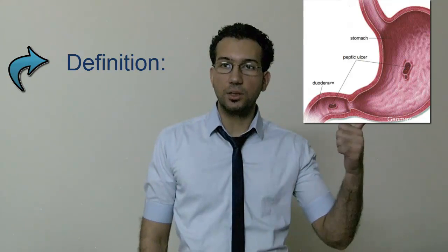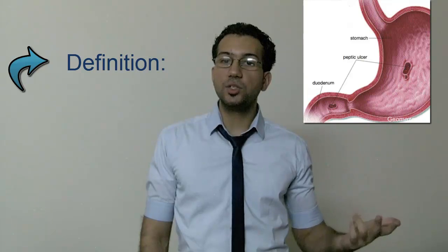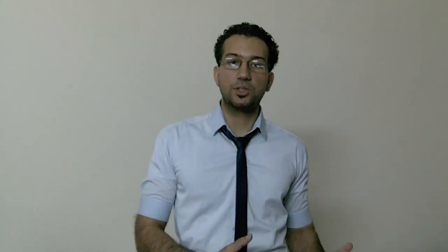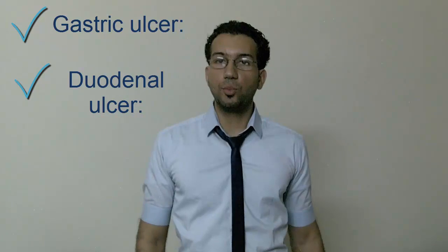A peptic ulcer is a sore on the lining of the stomach, or duodenum, or the beginning of the small intestine, and less commonly just above the stomach in the esophagus. A peptic ulcer in the stomach is called a gastric ulcer; one that occurs in the duodenum is called a duodenal ulcer. Furthermore, gastric and duodenal ulcers can both occur at the same time.